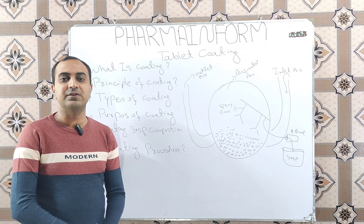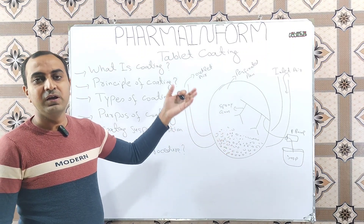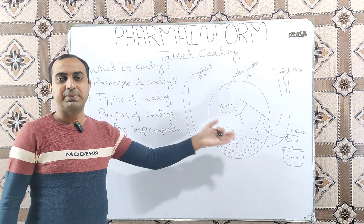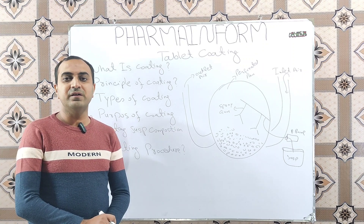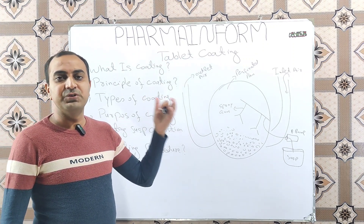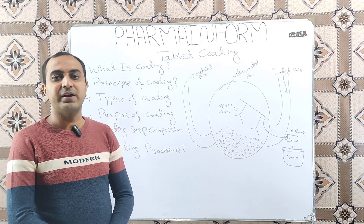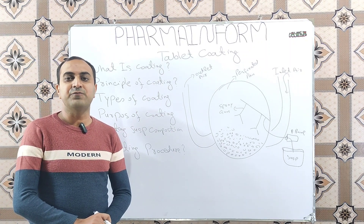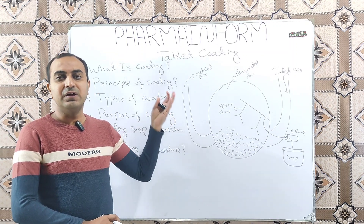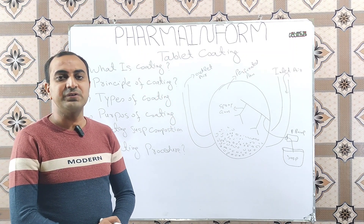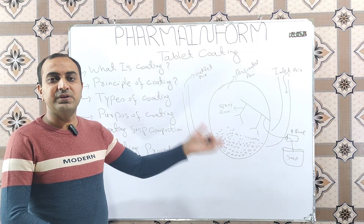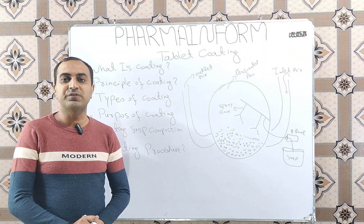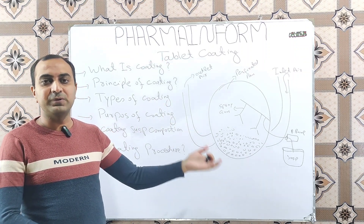We coat tablets to alter drug release — in the case of enteric coating or extended-release coating, we alter the release of the API. Another reason is to make the blistering process smooth. Coated tablets reduce friction in the feeding system, making blistering smoother. Similarly, counting and bottle-filling processes are also made smoother when tablets are coated.